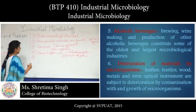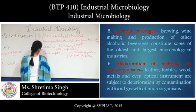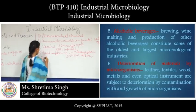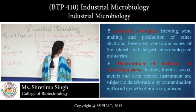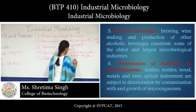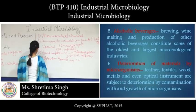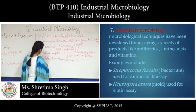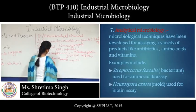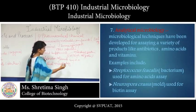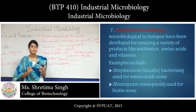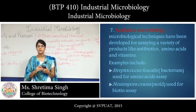The fifth group of industries involves the deterioration of different paints and chemicals using different microorganisms. The sixth group is analytical microbiology, where different assays are performed — for example, biotin is assayed using the yeast Saccharomyces carlsbergensis.